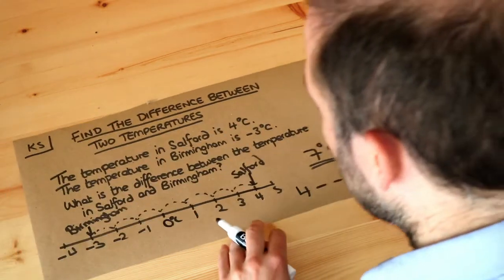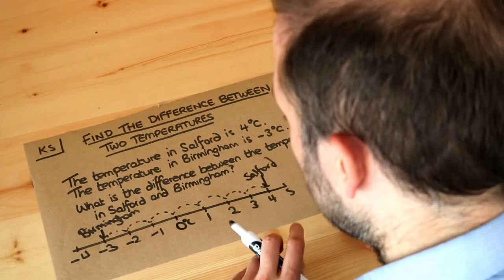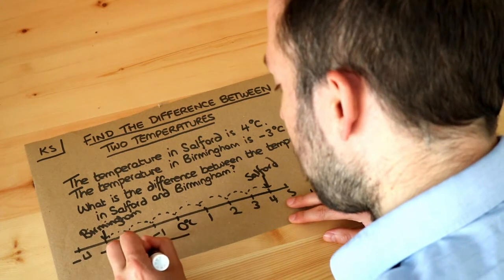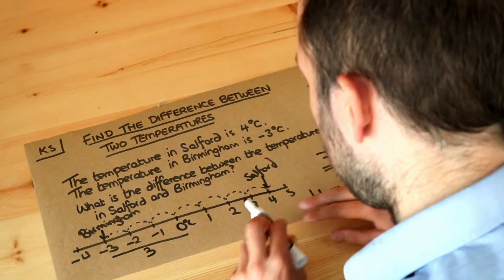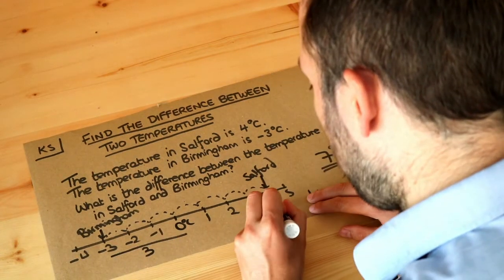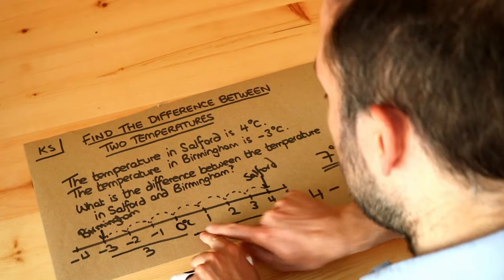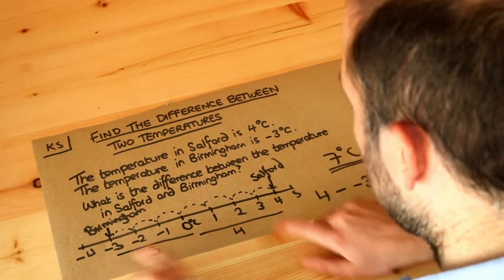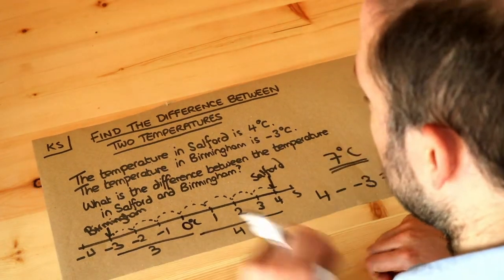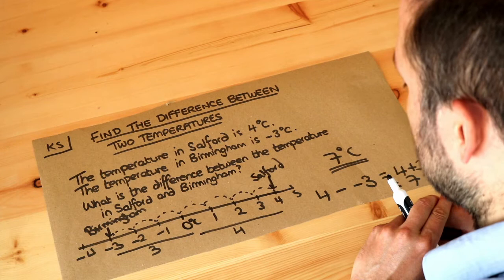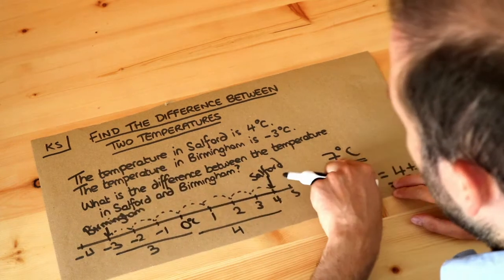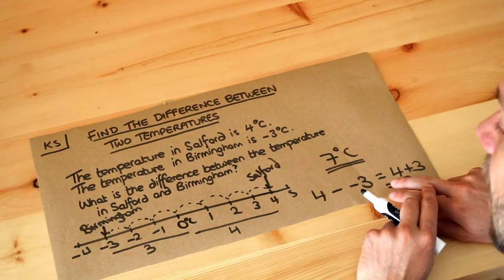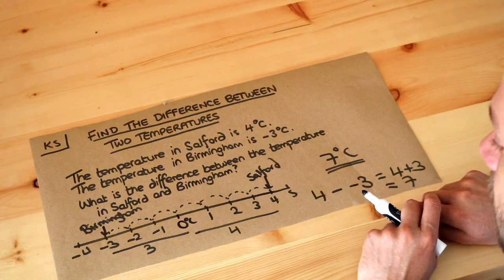The easiest way to think about it is that minus three is three away from zero, and four is four away from zero, so in total that gap must be seven. That's a third way you might want to think about it. Either way, we get seven degrees Celsius as the difference between those temperatures.